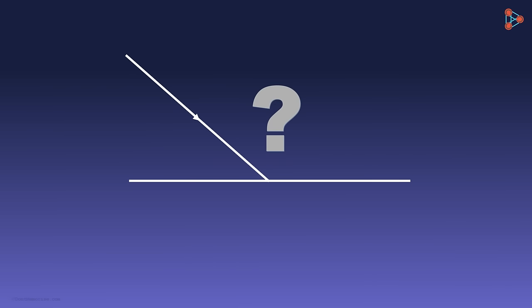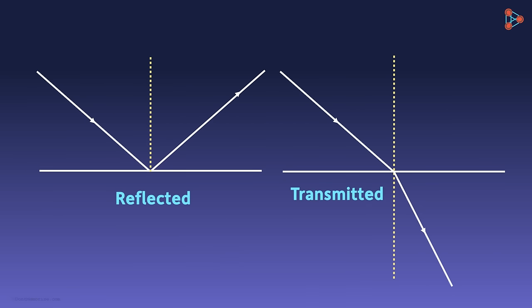What can happen when a beam of light is incident on the surface of any object? When a light beam is incident on the surface of any object, a part of the light can be reflected by the object, a part of the light can be transmitted.